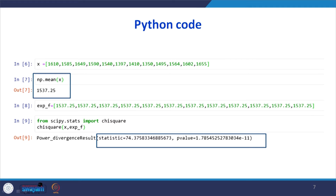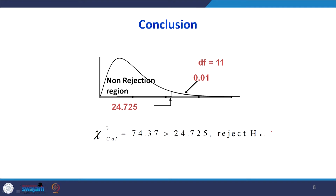Let us see the Python code for this. The x values are given and we find the mean = 1537. The expected frequency is that same mean value, entered manually. Then from scipy.stats import chisquare. When we run chisquare(x, expected_frequency), we get the calculated chi-square value = 74.37 and p-value = 1.7 × 10^-11. Our Python outputs and calculated values are the same. The table value was 24.725 and our calculated value is 74.37, so we reject the null hypothesis.